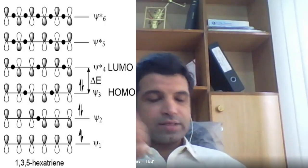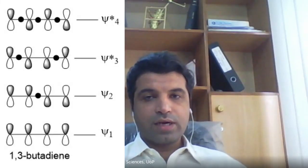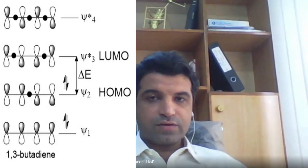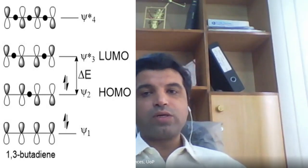In 1,3-butadiene we have four molecular orbitals, and the difference in energy between HOMO and LUMO is slightly greater than in 1,3,5-hexatriene. So for an electron to jump from HOMO to LUMO of 1,3-butadiene, it would require higher energy radiation because the energy gap is higher.